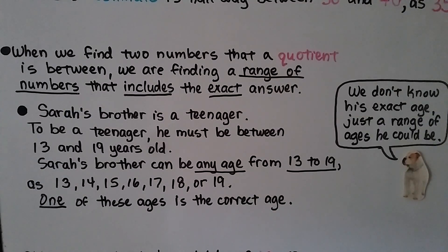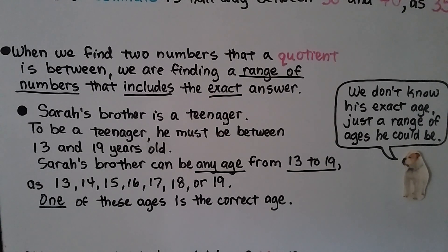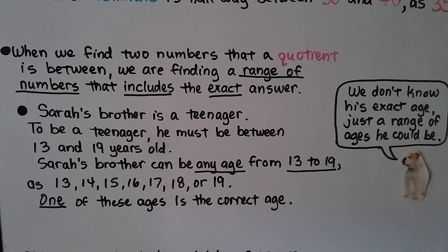When we find two numbers that a quotient is between, we are finding a range of numbers that includes the exact answer. For example, Sarah's brother is a teenager — to be a teenager, he must be between 13 and 19 years old. He could be 13, 14, 15, 16, 17, 18, or 19. One of these ages is the correct age, but we don't know his exact age, just a range of ages that he could be.